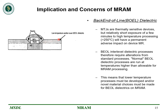The second implication is back-end-of-line (BEOL) dielectric. MTJs are thermally sensitive devices. A very short exposure to high temperature can cause permanent degradation of MTJs. Since the MTJ is the heart of this operation, there will be an anomaly due to higher temperature, with two different temperature layers: one at lower, normal BEOL dielectric temperature, and another at higher temperature which affects MTJ functioning. This means that a lower-temperature process must be developed for the BEOL dielectric of MRAM.